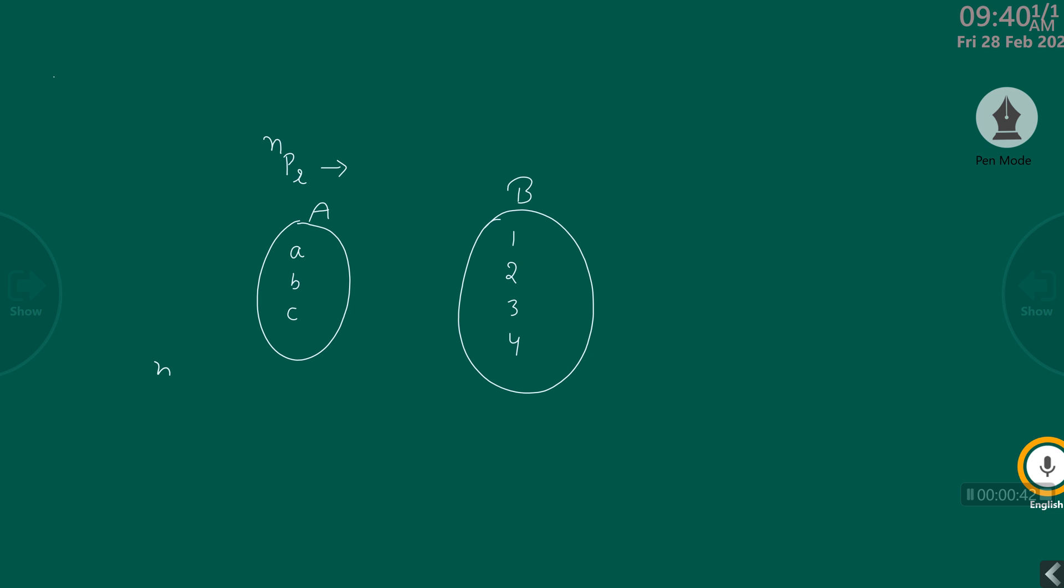So, how many elements in B? Four. How many elements in A? Three.